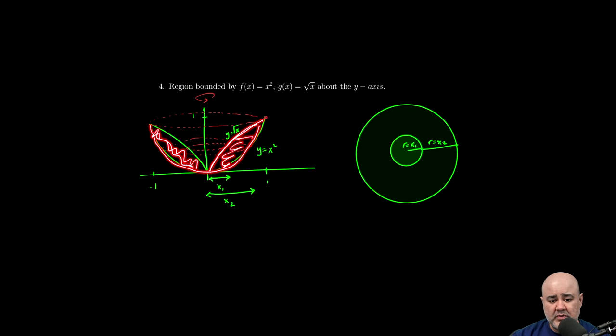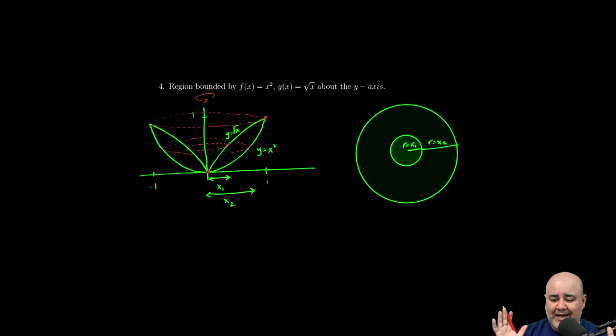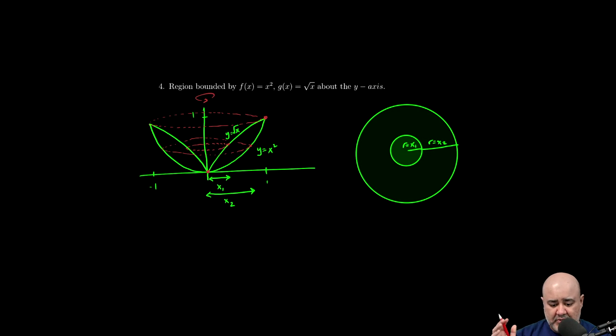One is to say we're going to use the disk method to find the volume of the entire outside shape, of the larger shape, which is going to be generated by x squared. Now, momentarily, let's forget about this part of the graph. And let's say we concentrate on just this empty, voided space.